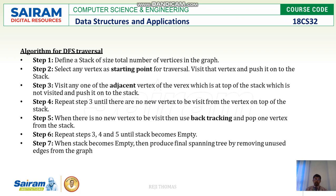When the stack becomes empty, you can produce the final spanning tree by removing unused edges of the graph. When we do this we get certain edges which are not used — remove them and you get a spanning tree which represents the DFS traversal of your graph.